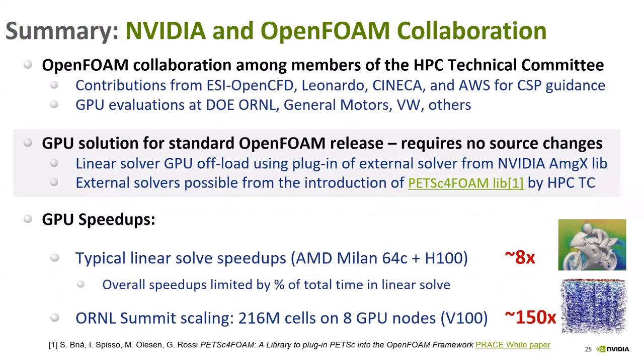In summary: we're expanding the collaboration and making it as open as possible. We invite you to work with us. We've already worked with Oak Ridge, General Motors, and VW at different levels. The collaboration has expanded to include AWS for guidance on the cloud service provider side. Our current approach makes absolutely no changes to the current OpenFOAM distribution. But we need to do more to get the non-solver code accelerated — that's what the PolyME developments Ivan mentioned are about. We want to make this a meaningful release. You can try to replicate the speedup results we showed, and we're happy to help if you have difficulties with the current implementation.